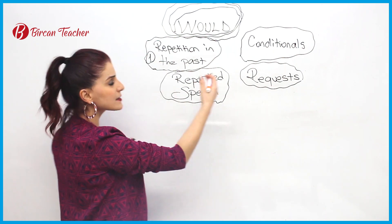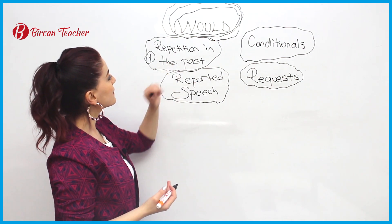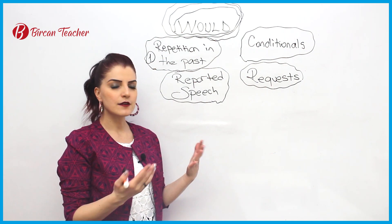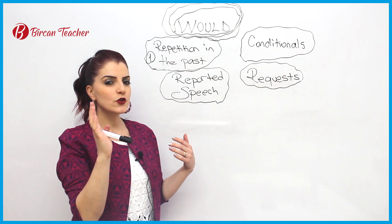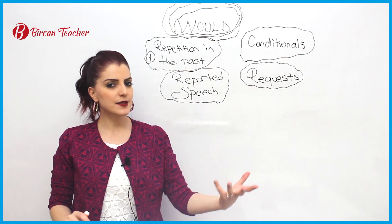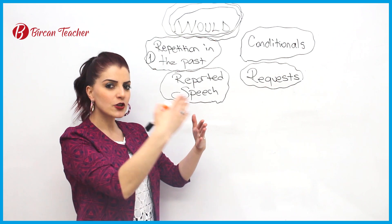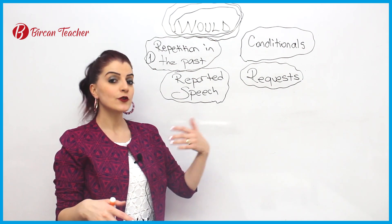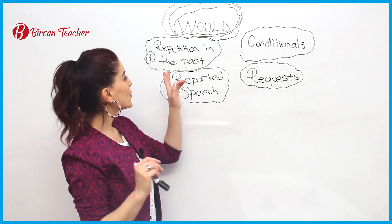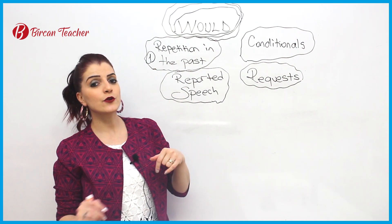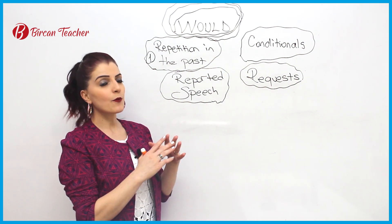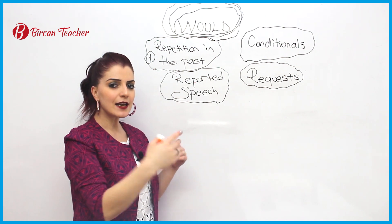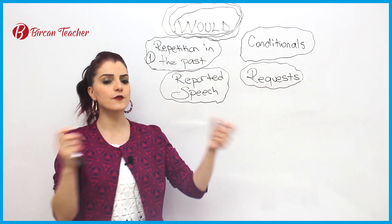Let's start with number one. When I give you some examples, maybe you will understand better. Repetition in the past — normally in English, repetition in the past can be referred to by using 'used to.' You may remember 'used to' for past habits, past actions that you did regularly. For example, for one or two or three years, you used to play the piano, you used to smoke, or you used to swim in the lake. This is an action in your past life that you did regularly.